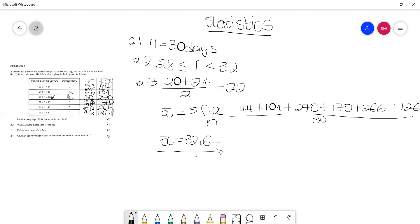Then 2.4 says, calculate the percentage of days on which temperature was at least 28 degrees Celsius. So here we want the number of days where the temperature was more than 28, right? So we'll go to our table and we'll say, okay, let's start from the bottom. This is more than 28, that is more than 28, that is more than 28. When you look at these two, here 28 is not included, here 28 is included, which means we will say